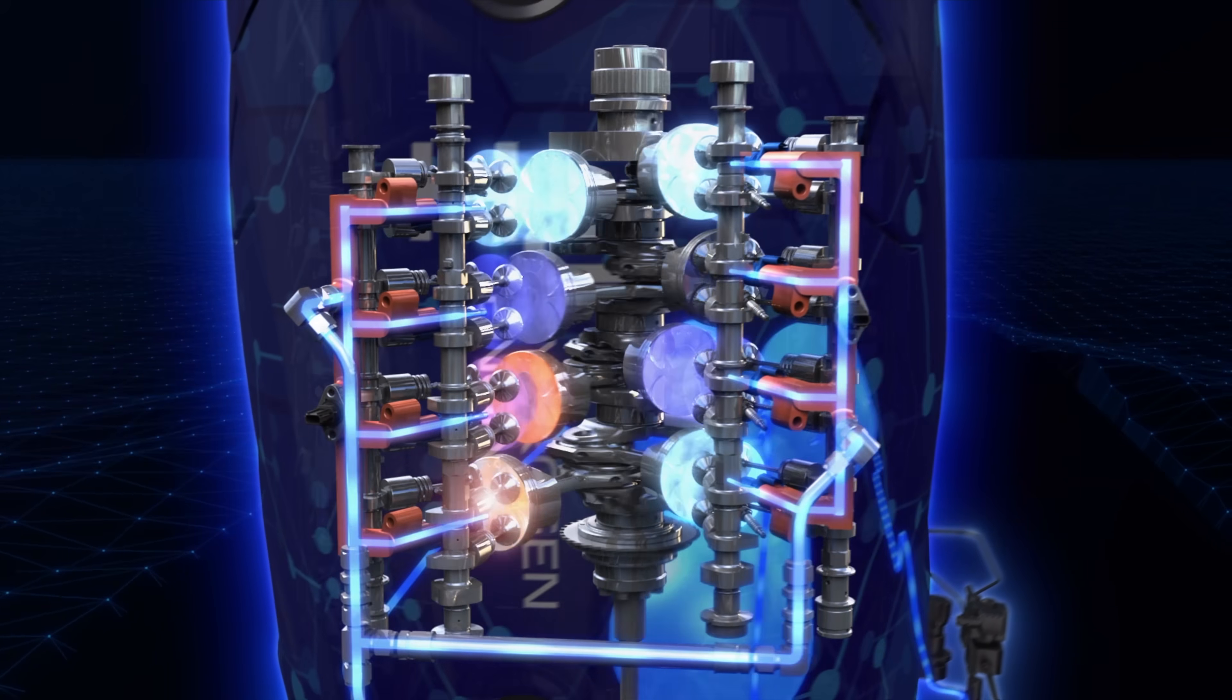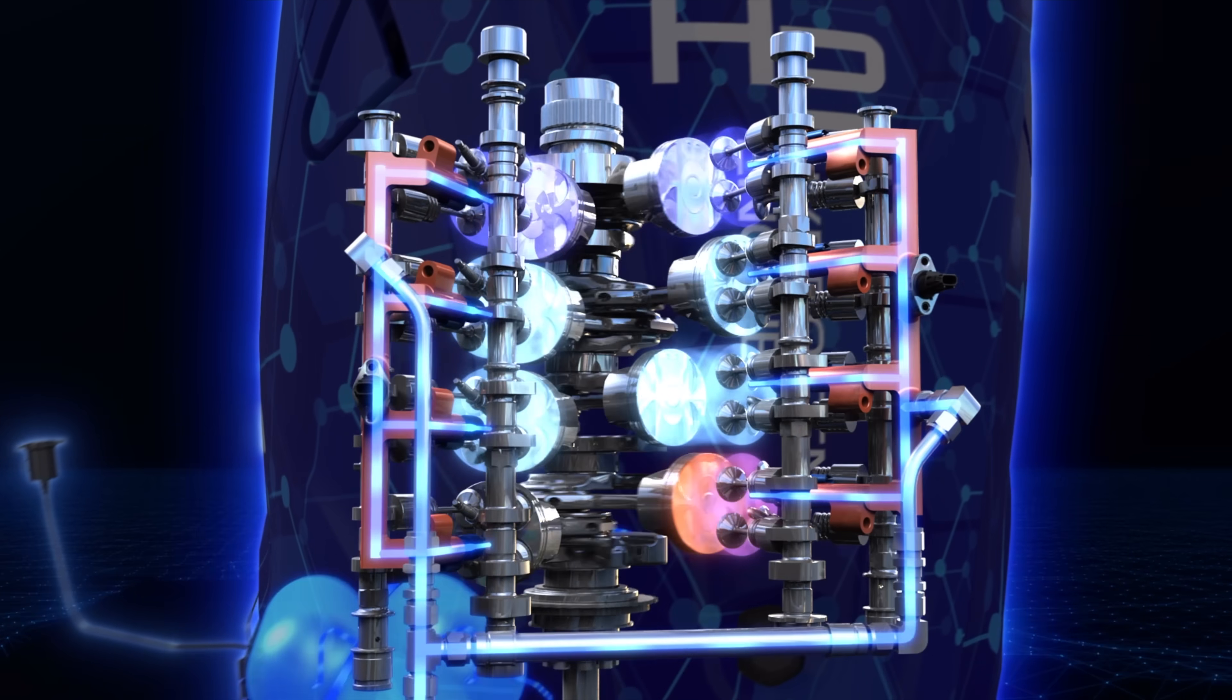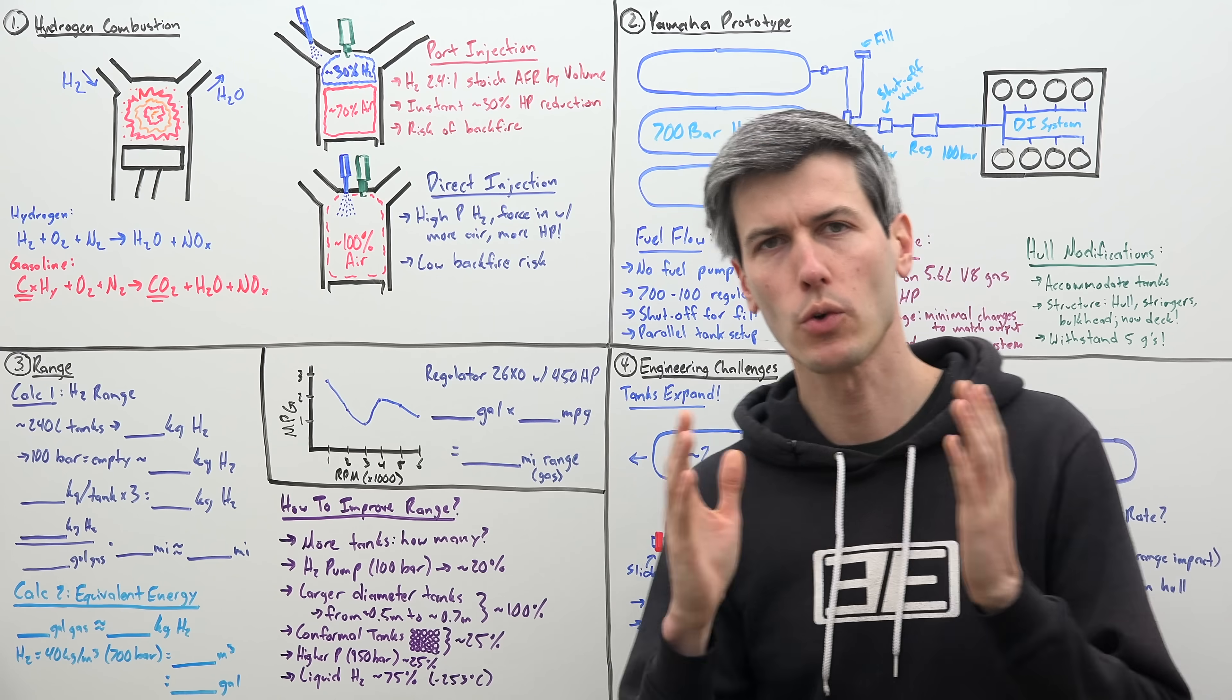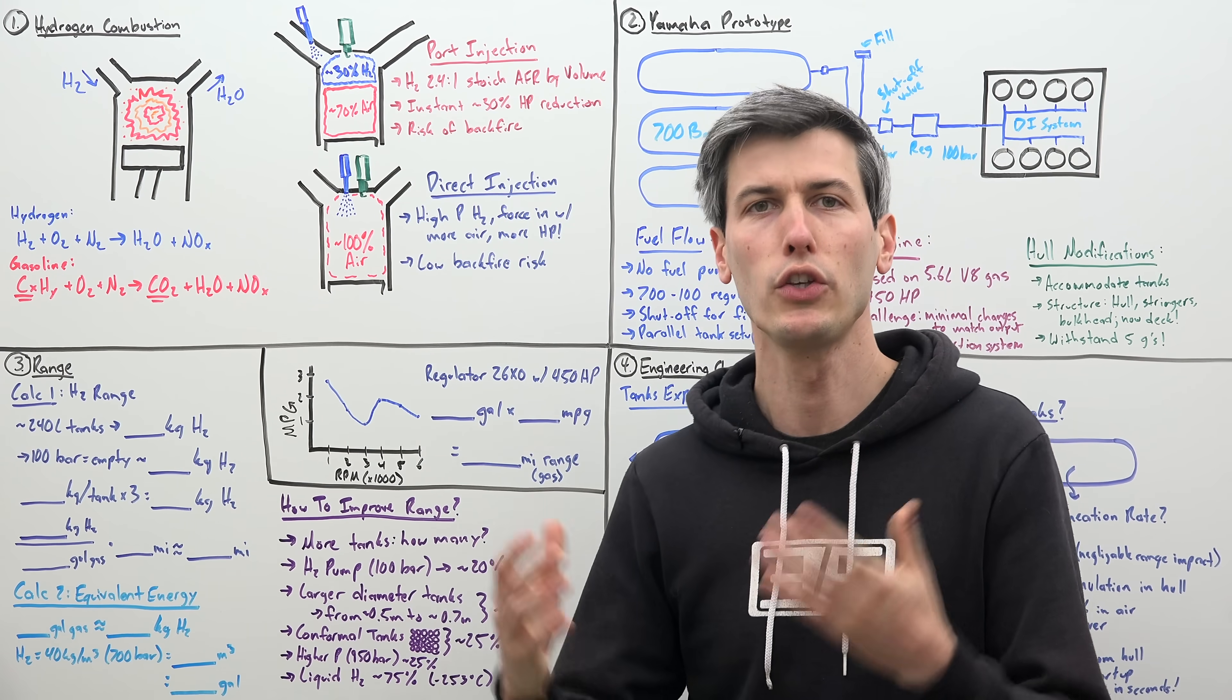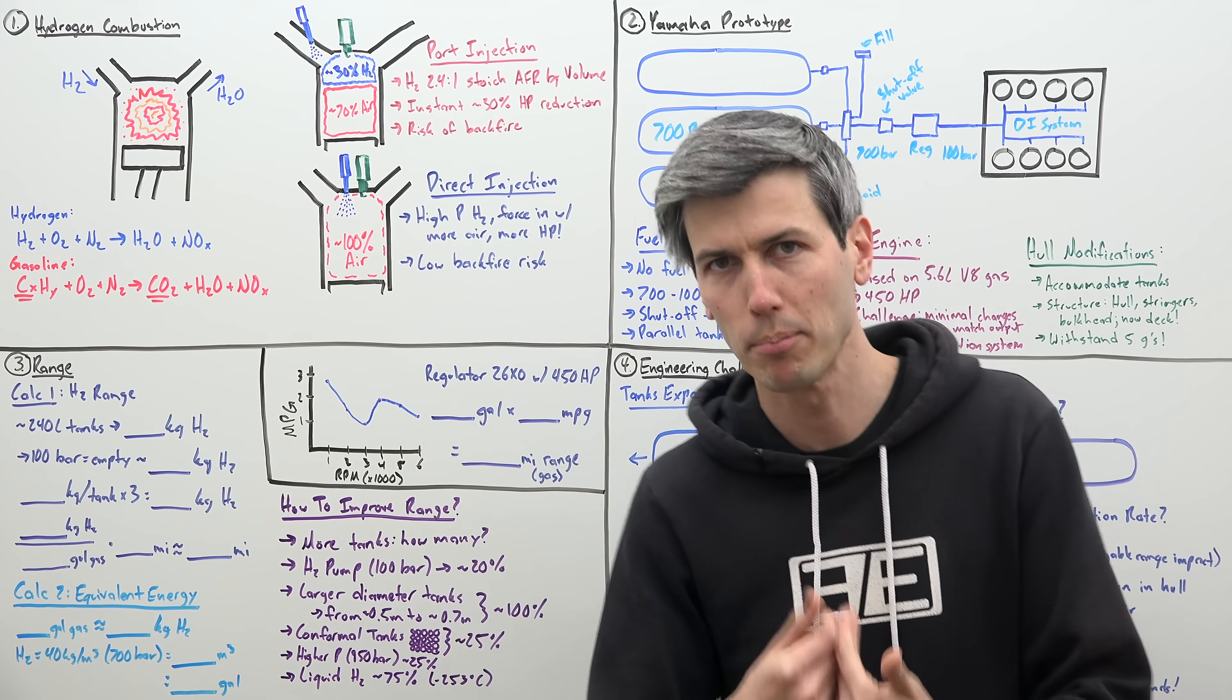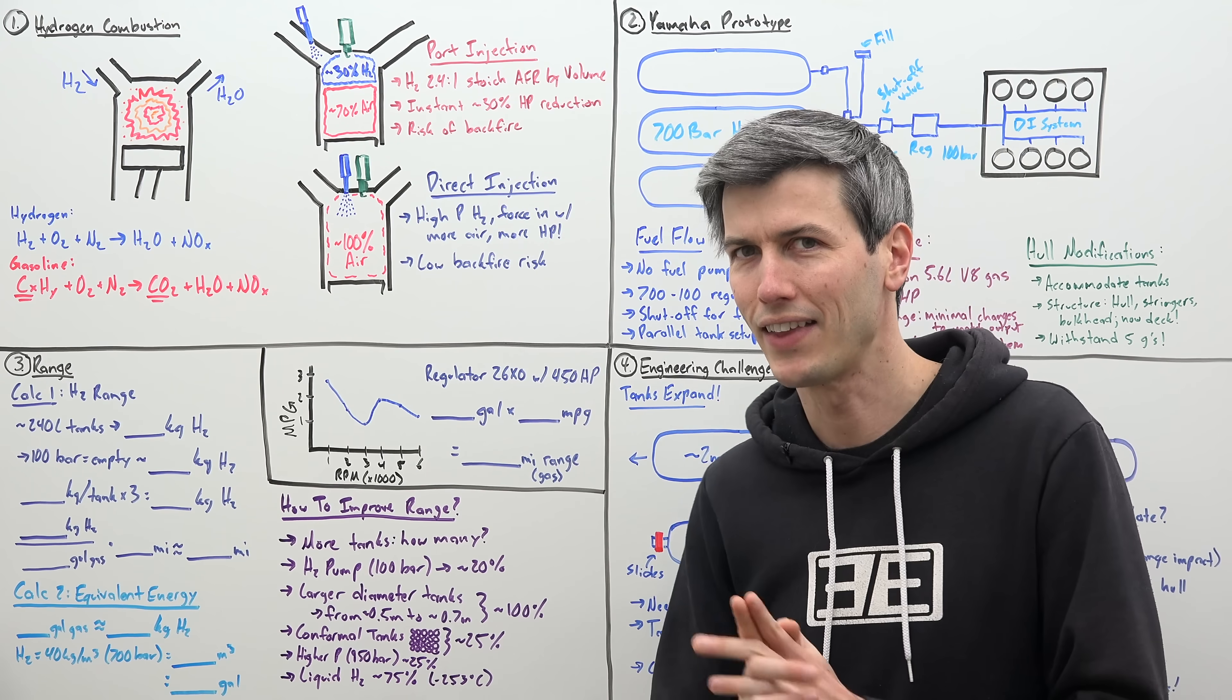Direct injection is one key piece of technology used which plays an important role with hydrogen combustion. So with naturally aspirated combustion engines like the one that this boat is using, using direct injection is really important for hitting power targets. So why is that?